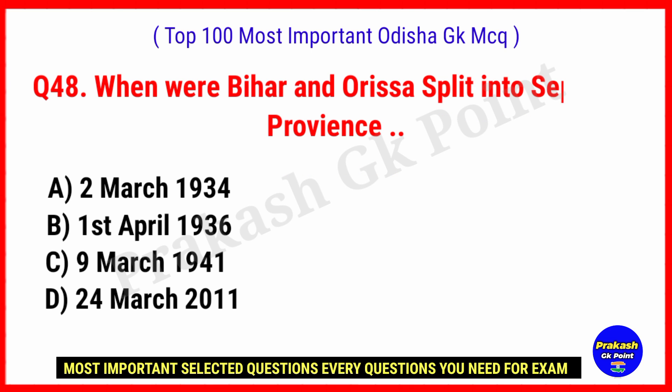When were Bihar and Odisha split into separate provinces? Answer: Option B, 1 April 1936.